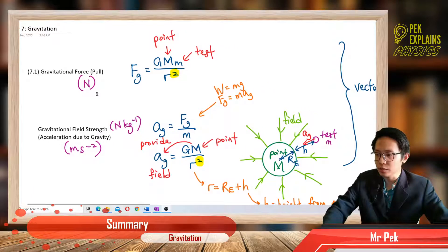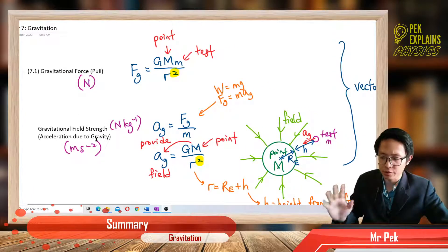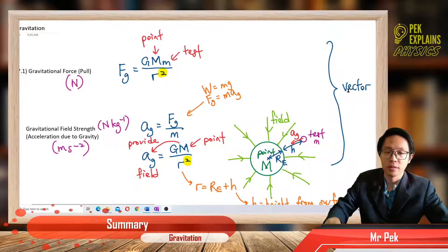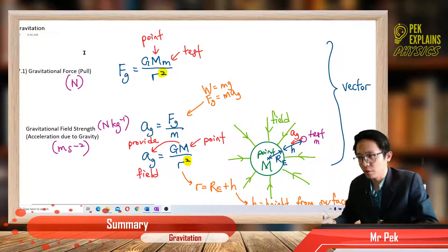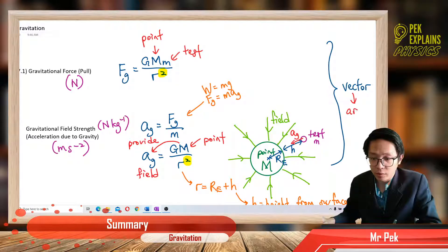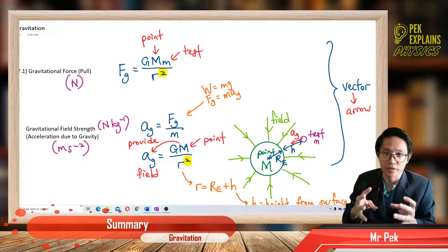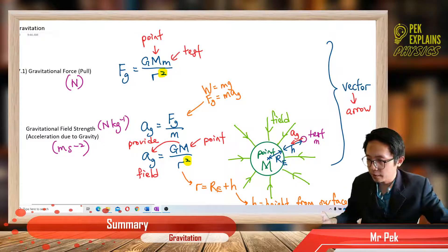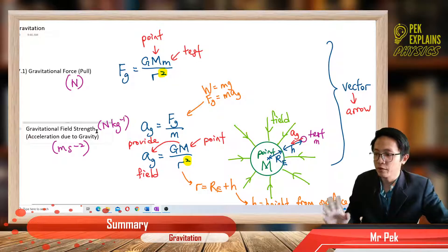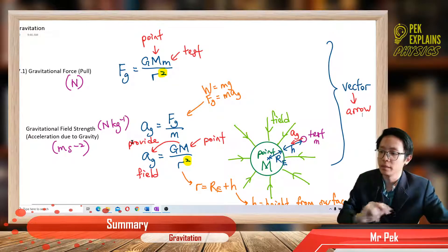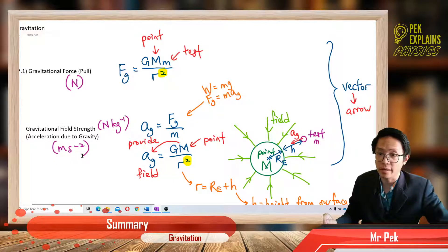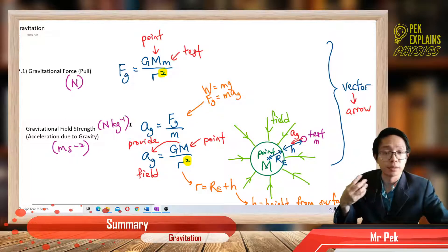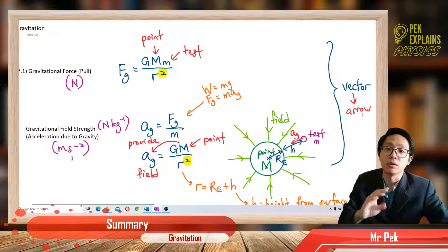These two quantities — force and field strength, or acceleration due to gravity — are called vectors. They are vectors, so they have direction. When you do questions, don't forget to put an arrow because they have magnitude and direction. The unit of force is Newton. Field strength is also called acceleration due to gravity, so ag has two usable units: Newton per kilogram or meter per second squared. Both units can be used. If the question asks for field strength, use Newton per kilogram. If it asks for acceleration, use meter per second squared — depending on context.